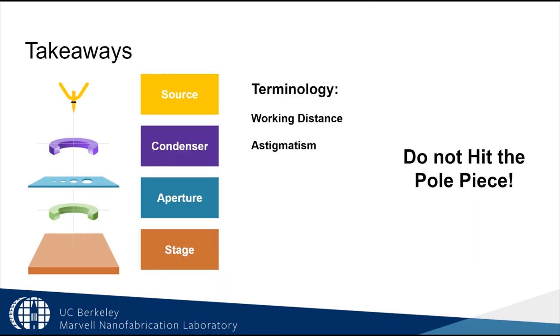At this point you should be familiar with the role of the source, condenser, aperture, and stage in determining the beam characteristics. You should know what working distance is, and what astigmatism is. And of course you will always remember to never hit the pole piece. This is the end of video 1. Please continue to video 2 to complete the requirements for SEM class.